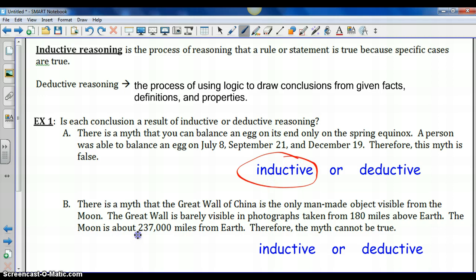Part B. There is a myth that the Great Wall of China is the only man-made object visible from the moon. The Great Wall is barely visible in photographs taken from 180 miles above Earth, and the moon is about 237,000 miles from Earth, a much greater distance. Therefore, the myth cannot be true. This conclusion is based on the facts that are given, so this is a use of deductive reasoning.